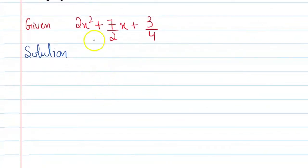So the second term, you can write it like this: 2x square plus 6 upon 2x plus 1 upon 2x plus 3 upon 4.